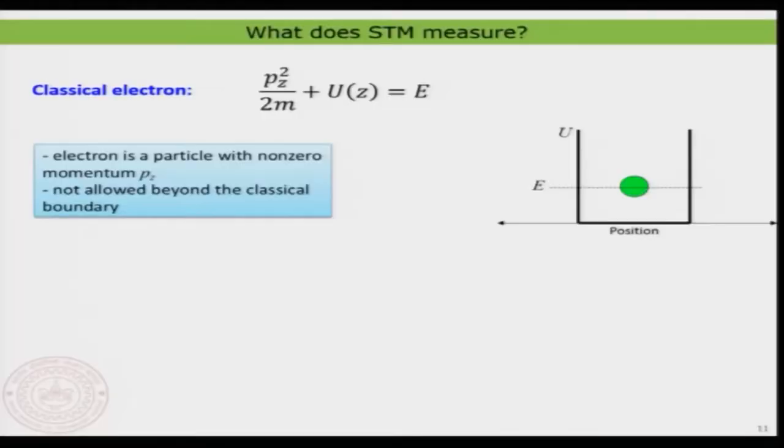The quantum mechanical description of the electron is quite important in defining or explaining the tunneling itself and therefore the tunneling current. A classical electron is represented by an energy expression: it has kinetic energy and potential energy, and that defines the total energy of the electron.